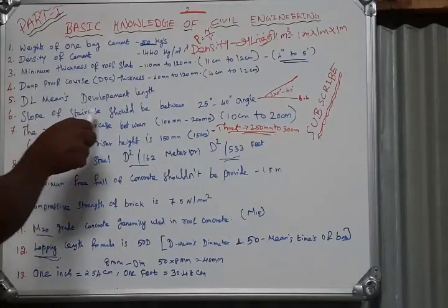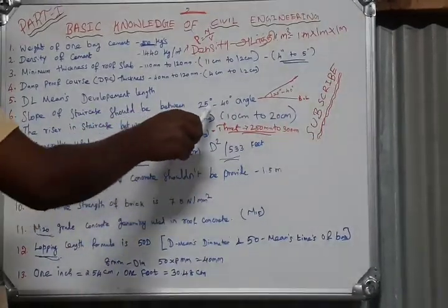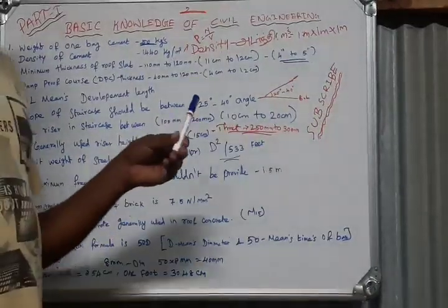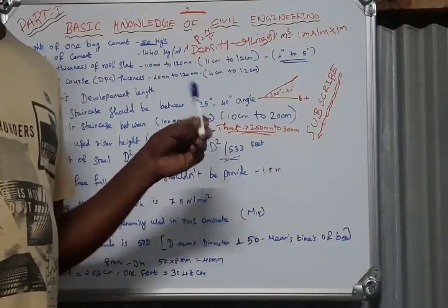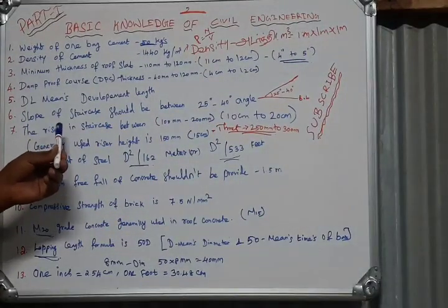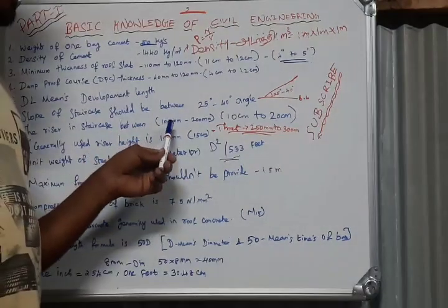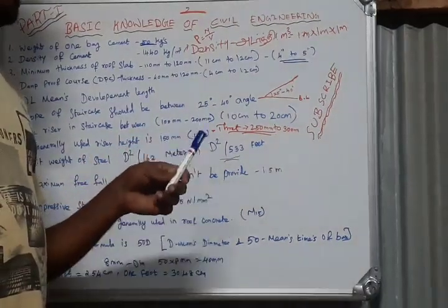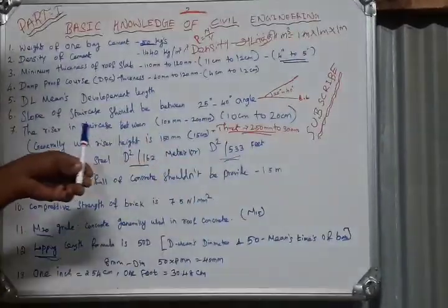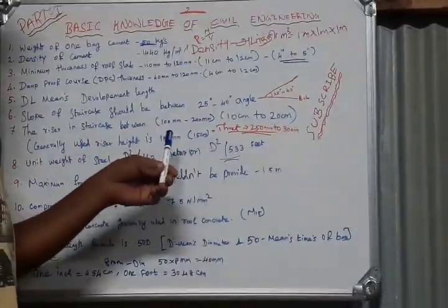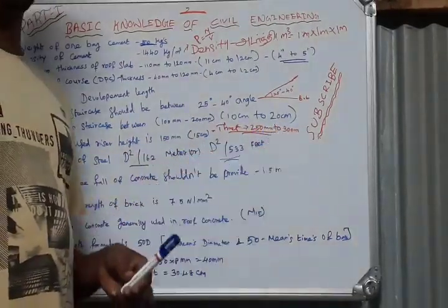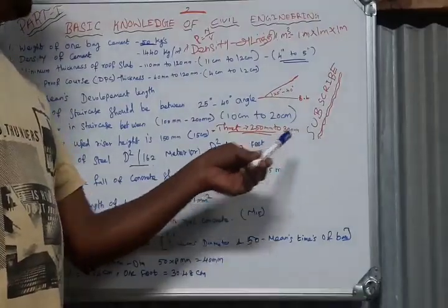Slope of stair case should be 25 degree to 40 degree angle. Above 100 mm, 100-120 cm above. Here we have the 300 mm above.